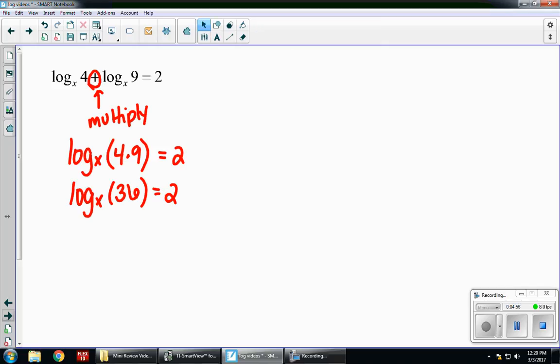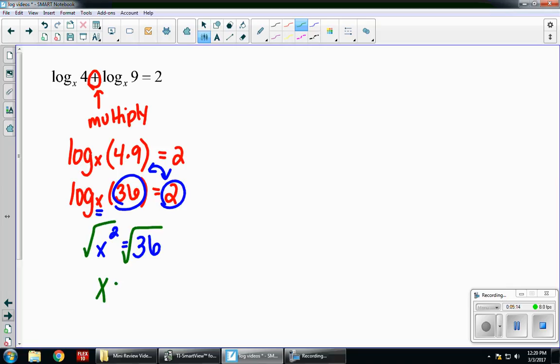Now, I'm going to convert it to an exponential. Keep my base. Switch my other two pieces. So, x to the 2 becomes the power. 36 becomes the answer. Now, I solve by square rooting each side. Remember that when you take the square root, you get a positive and a negative. Meaning, I technically have two answers: x equals 6 and x equals negative 6.